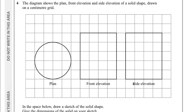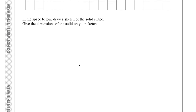Front elevation and side elevation are easy — the front is the front view, the side is the side view. The plan is from above: you're looking down on the shape, and in this case it's a circle. So what shape is this? It's a cylinder. When you look at a cylinder from the side and from the front they look like identical rectangles, and from above you see a circle. So we need to draw a cylinder below.